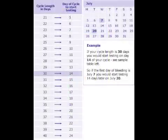You should start testing a few days out from your likely ovulation date. Therefore, if you have a 30 day cycle, this will be day 14, with day 1 being the first day of your period.